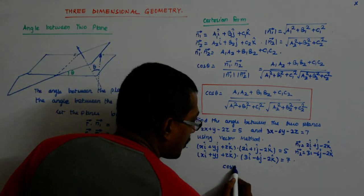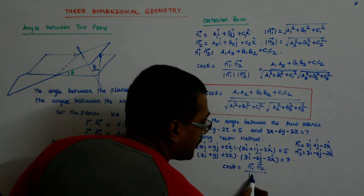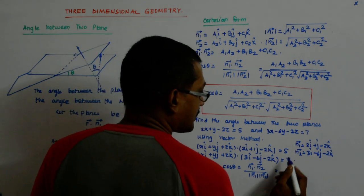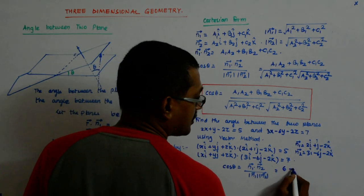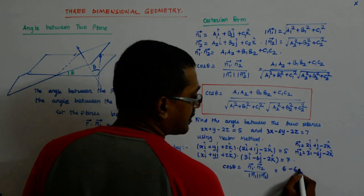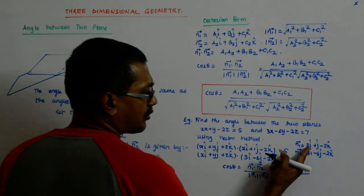So I have cos theta is equal to n1 dot n2 upon mod n1 mod n2. Now that is equal to 6 minus 6 plus 4. 3 into 2 is 6, 1 into minus 6, plus 4 divided by, what is mod of this?